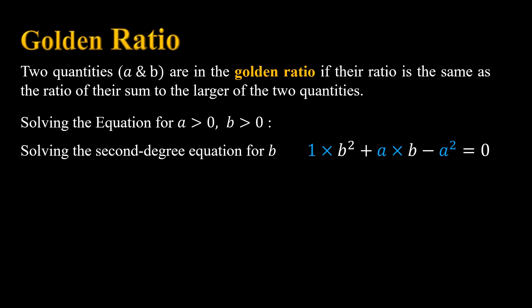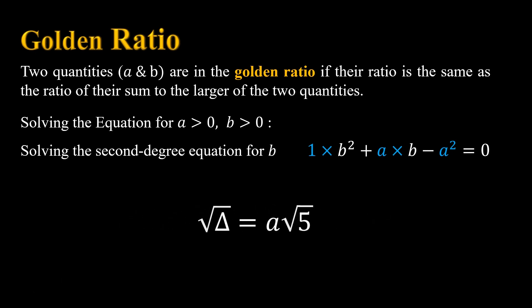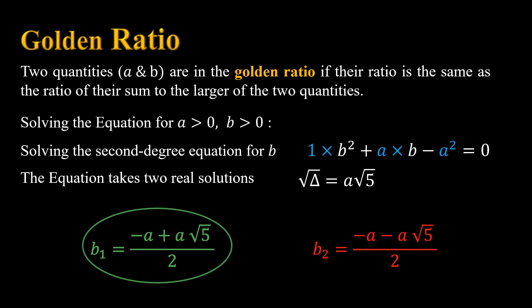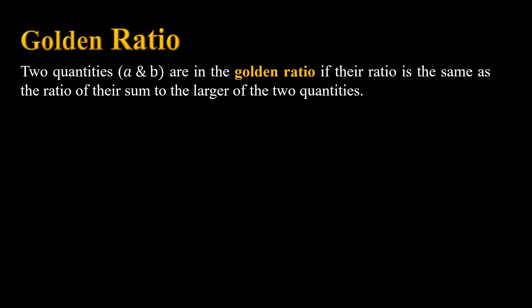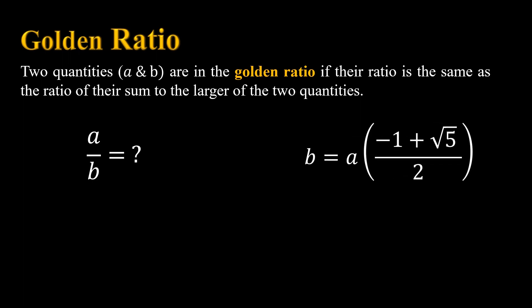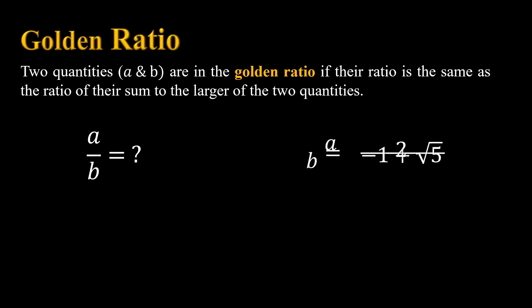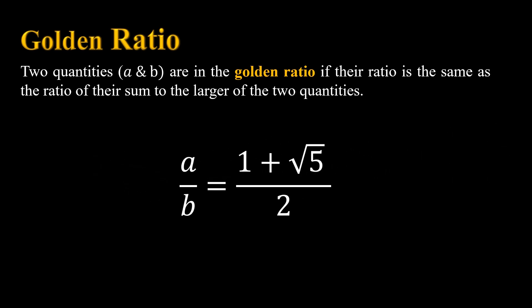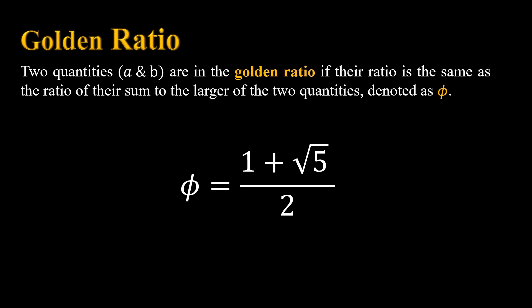By computing the discriminant of this equation, we will find that it's equal to 5A squared, which is positive since A is positive. The square root of this will be equal to A times the square root of 5. We then get solutions B1 and B2. We will refuse the second solution of B since it's negative, as we assume B should be a positive number. Since we're interested in the ratio A over B, and we already computed the value of B, rearranging the algebraic expression, we find that A over B equals 1 plus square root of 5 over 2 — this quantity is denoted as phi, which represents the golden ratio.